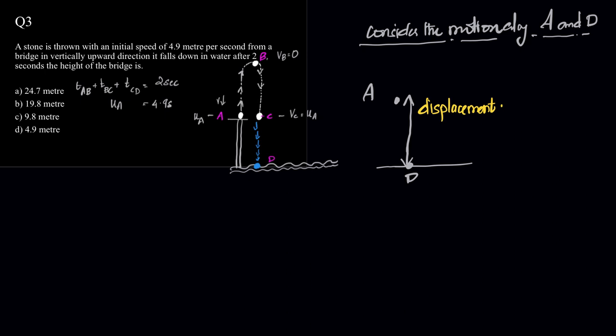Now coming to the sign convention, as usual the body is projected from A. The initial velocity is along the positive direction. Acceleration due to gravity is along the negative direction, so we will take this as positive and this as negative. So we have the initial velocity as positive and acceleration due to gravity as negative. Now you may ask, what about the direction of displacement? I will come to it and explain the difference.